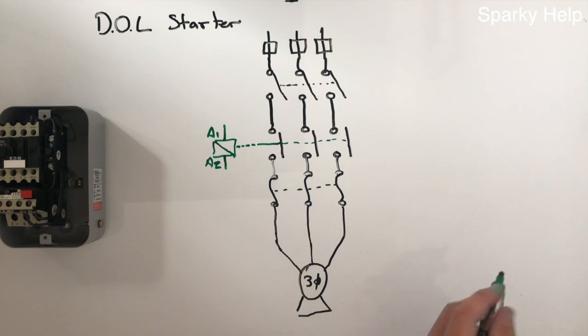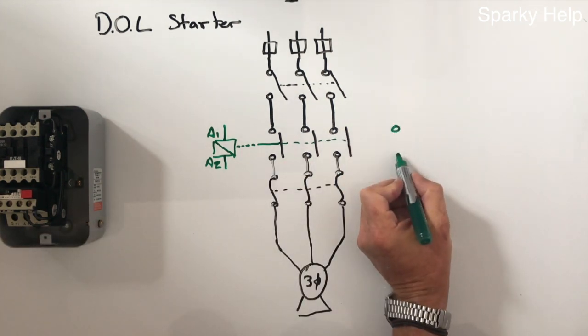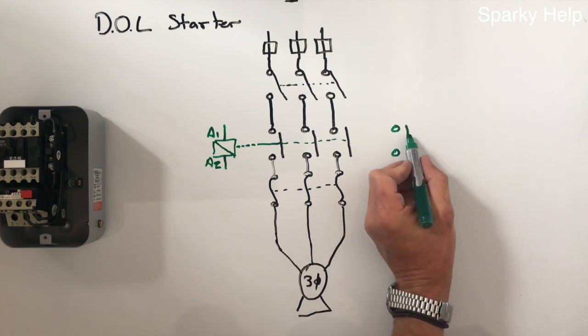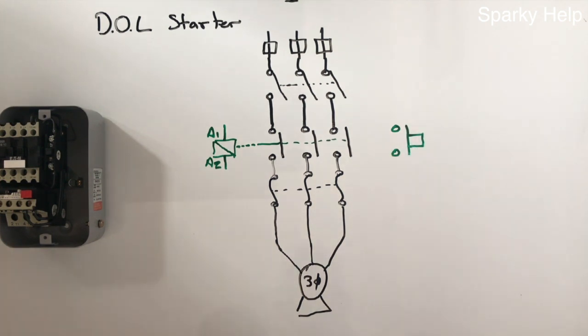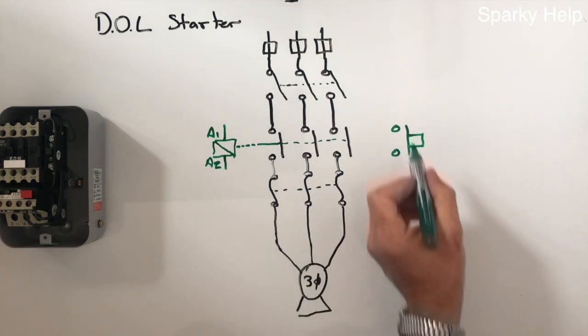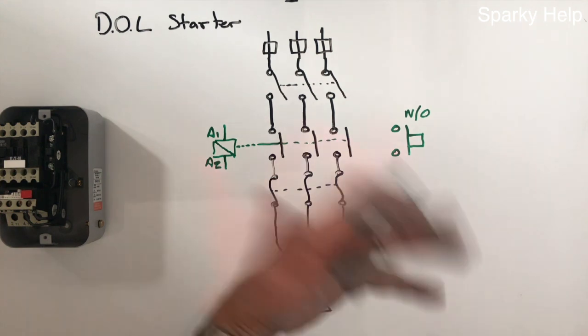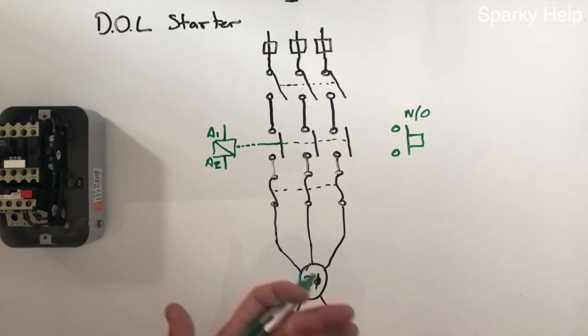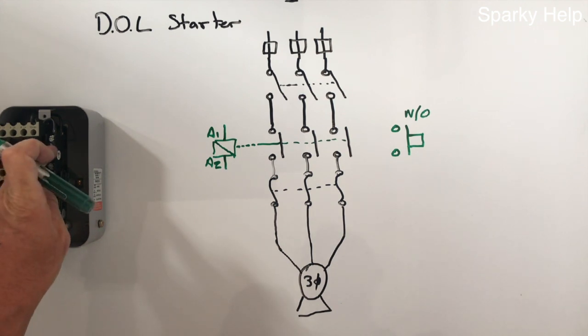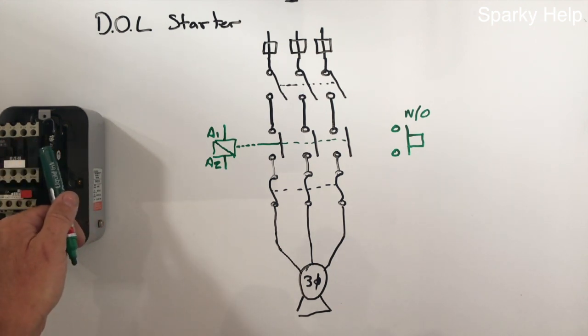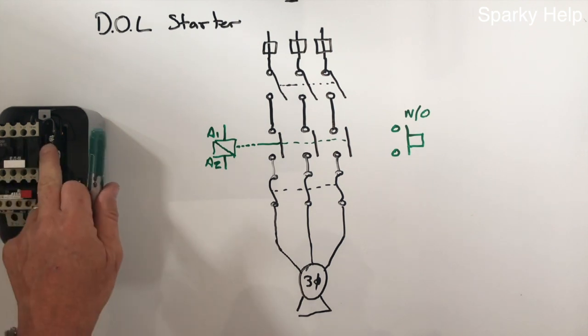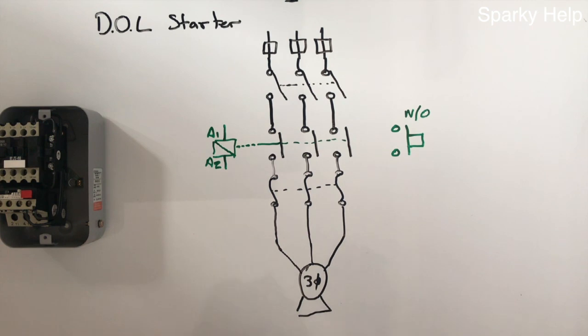So we need to make it turn on. So we need a start button. Well, as we know, the start buttons are green. So I'll do it green. And the start button is just a push to make. So these are normally open contacts. So this is a bit like your doorbell on your house. If you press this button, or you press the button on your doorbell, the bell will ring. Take your finger off, it will come off. And that there is the start button. And as you can see, it's just a push to make. Push to make switch only.